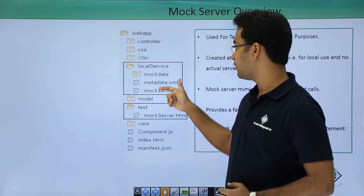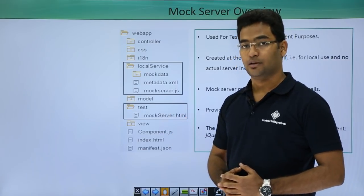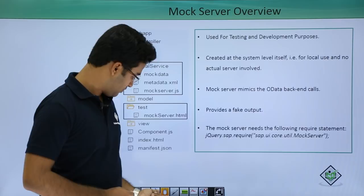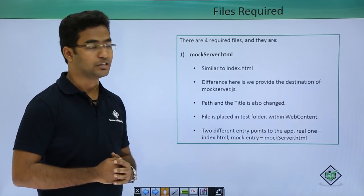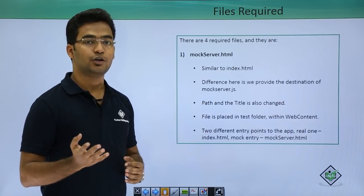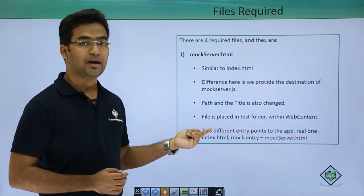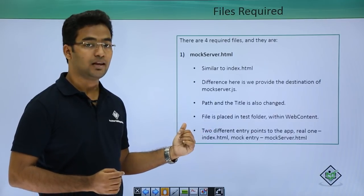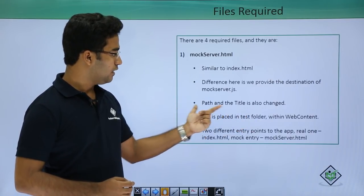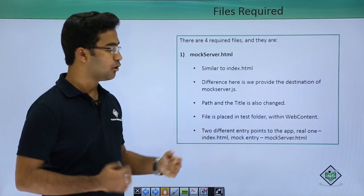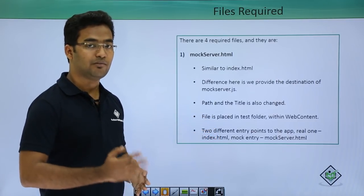These four files are required: mock data, metadata, mock server dot js, and mock server dot html. The first one is mock server dot html, which is similar to index dot html itself. There are some basic differences: one, we have to provide the path for the mock server dot js file, and second, we can also change the title. This file is contained in the test folder within the web content.